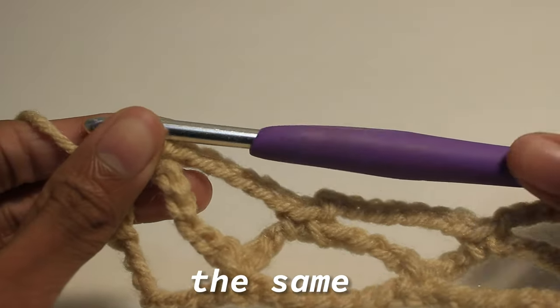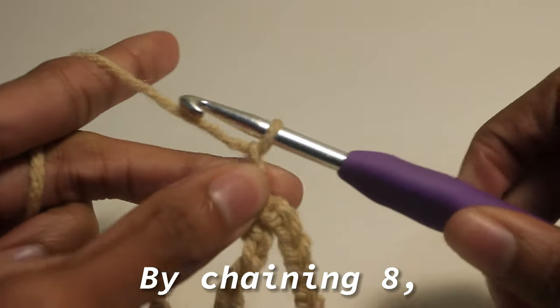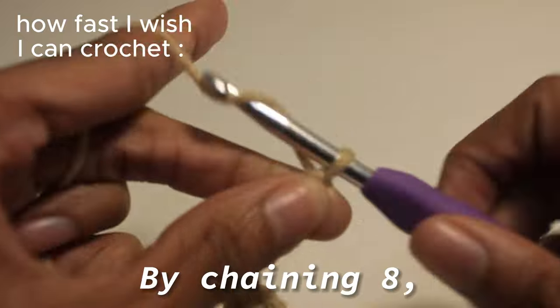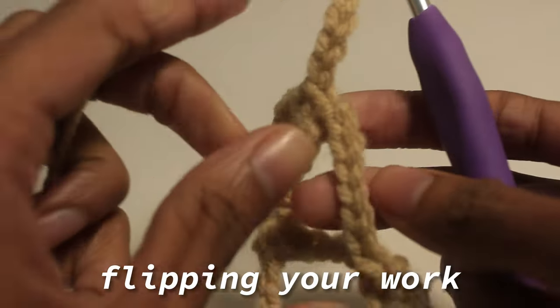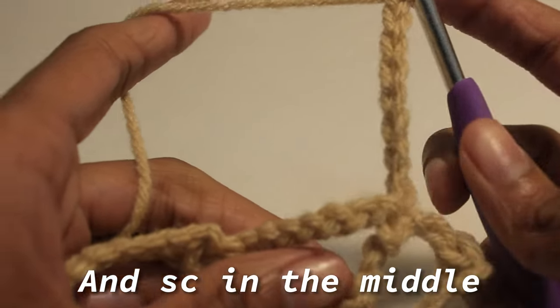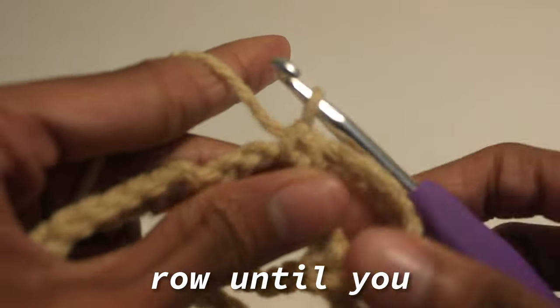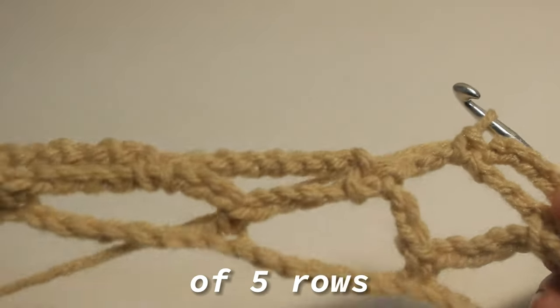We're going to start every row the same by chaining eight. You want to repeat the last row until you have a total of five rows.